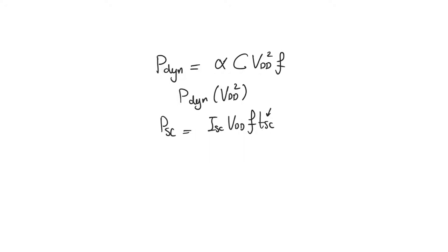We can also manage short circuit power dissipation by reducing power supply, by reducing operating frequency, or by reducing the amount of short circuit current that flows. To a first order, it seems that short circuit power is a weaker function of supply than dynamic power, because dynamic power was a quadratic function of the power supply.